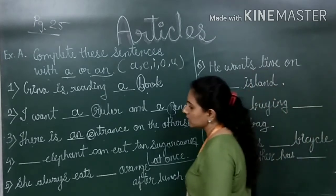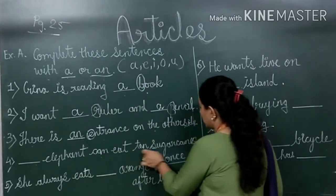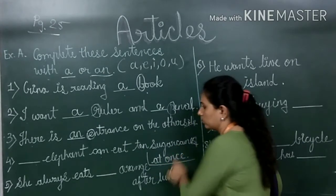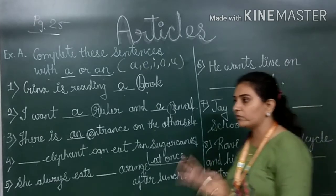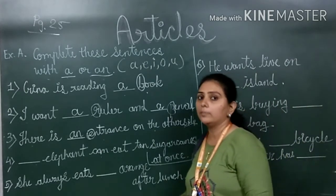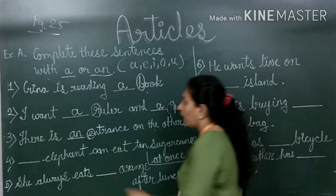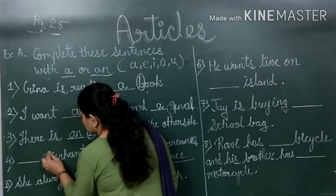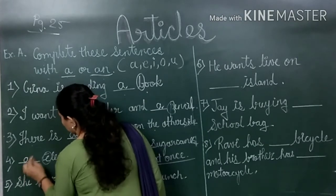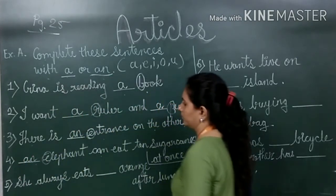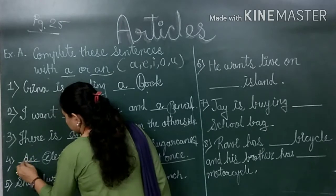The next sentence is: blank elephant can eat 10 sugarcanes at once. 'Elephant' also starts with E, which is a vowel. So here also we use 'an'. The answer is: An elephant can eat 10 sugarcanes at once.